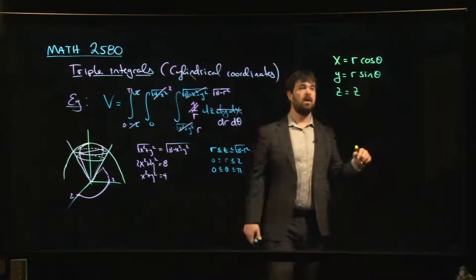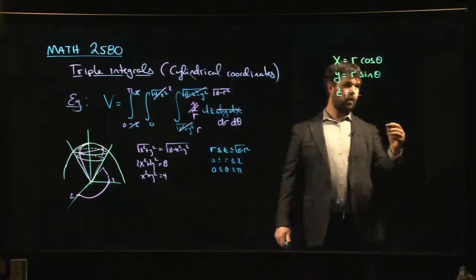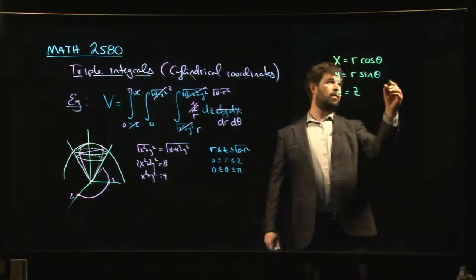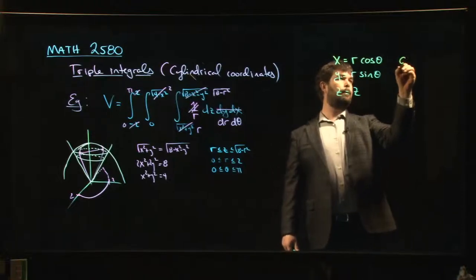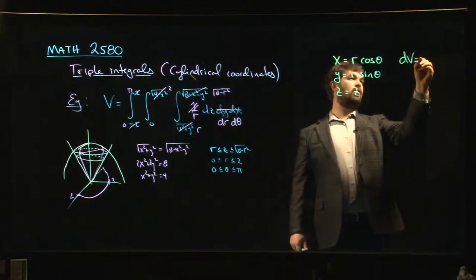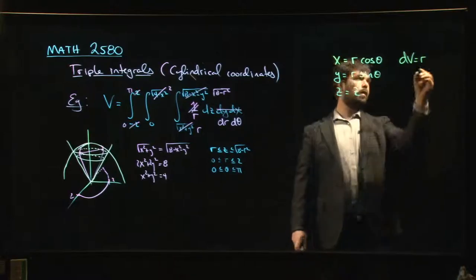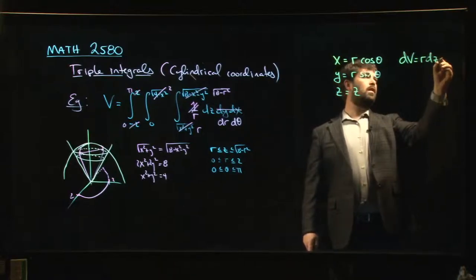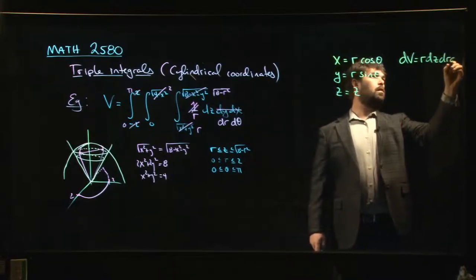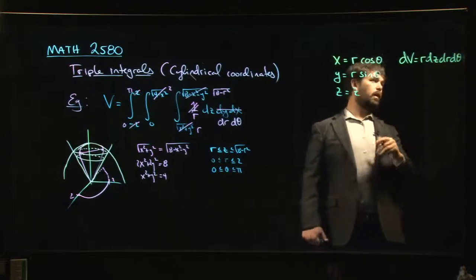So z is just z. And our volume element dV becomes r dz dr d theta.